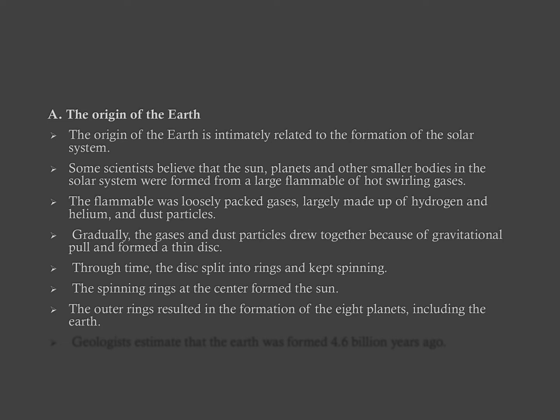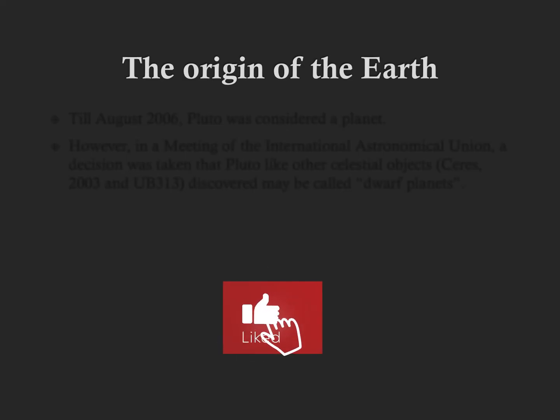The spinning ring at the center resulted in the formation of the sun and the outer spinning ring resulted in the formation of the eight planets which includes the earth. Geologists estimate that the earth was formed 4.6 billion years ago.